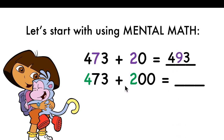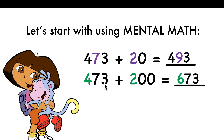When you're adding hundreds, you're adding the hundreds digits. 200: the 2 is in the hundreds digit. And 400 is 4 in the hundreds digit. 4 plus 2 equals 6. The tens and ones will stay the same. So: 6, and then 73 — 673.